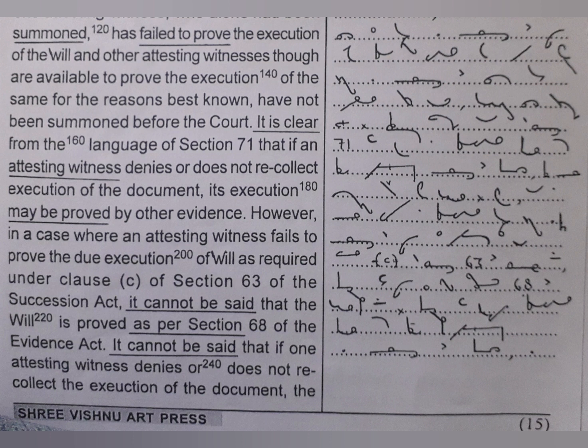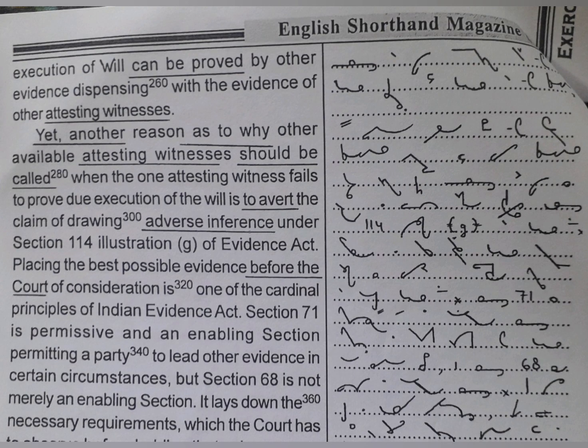It cannot be said that if one attesting witness denies or does not recollect the execution of the will, it can be proved by other evidence, dispensing with the evidence of other attesting witnesses. Yet another reason as to why other available witnesses should be called when the one attesting witness fails to prove due execution of the will is to avert the claim of drawing adverse inference under Section 114, illustration (g) of the Evidence Act, placing the best possible evidence before the court of consideration.